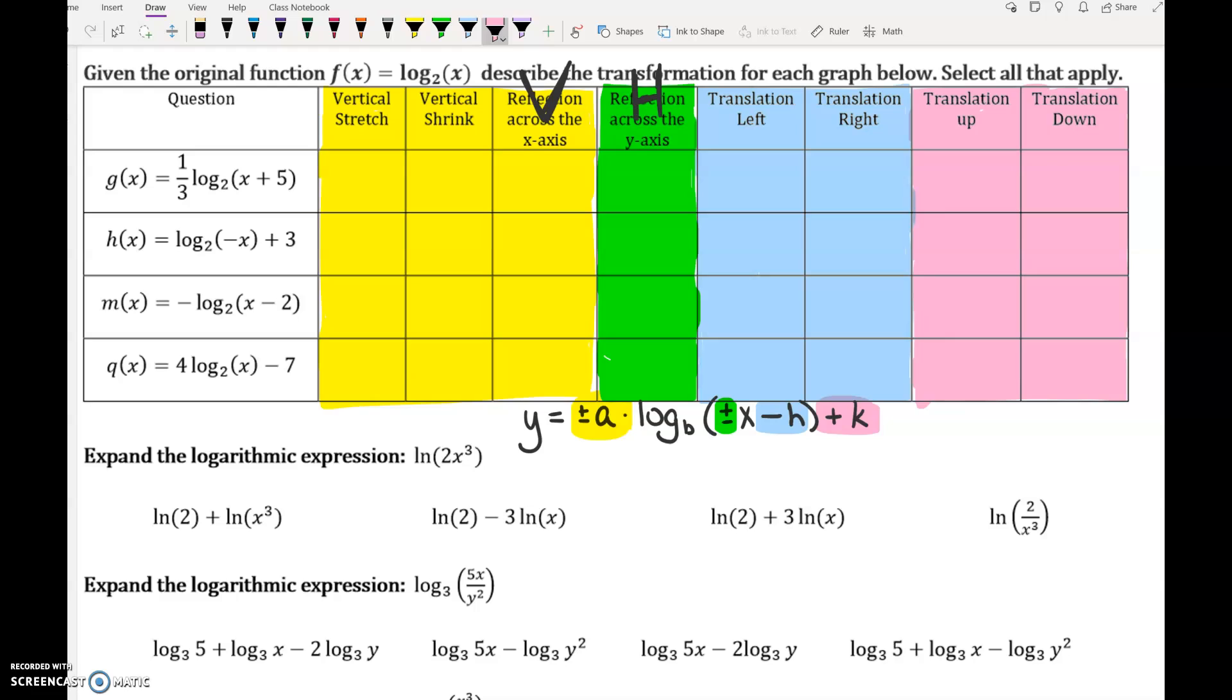So in the first one, we've got a one-third in the front. Anyone want to take a guess what the one-third in the front does? It is a vertical shrink. If that number was a bigger number, like two, three, four, anything bigger than one, it would be a vertical stretch. So if you want to look through here, you might notice that this last one has a four in front. That one is going to be the vertical stretch.